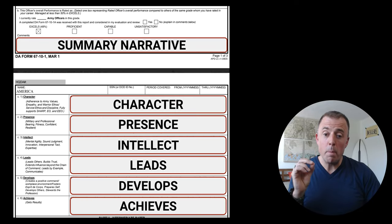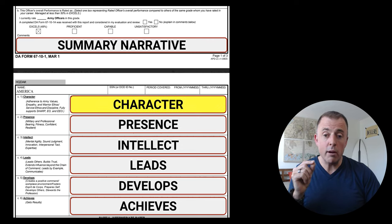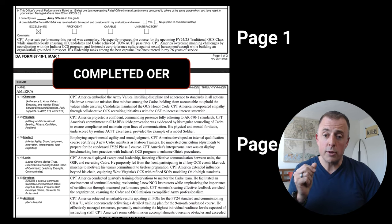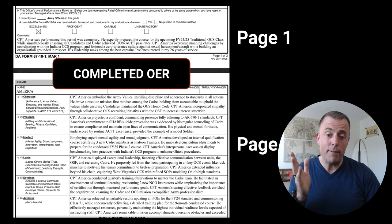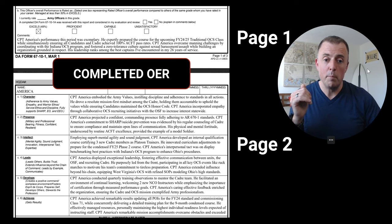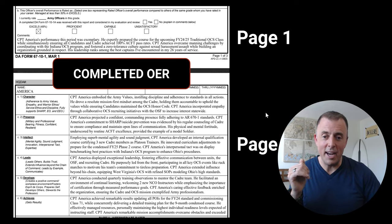Here we go. This is the finished OER — this is what we're shooting for. That summary narrative right here, then character, presence, intellect, leads, develops, and achieves. This is the actual finished form, and it's going to look something like this when we're all done — that final narrative at the top and then all six different components on page two.